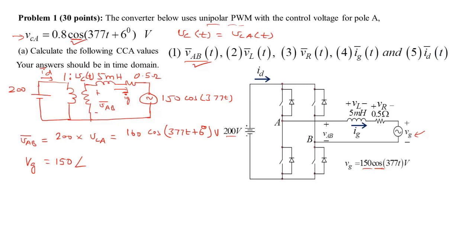Vg is defined as 150∠0°. If both were given as sine, we would use sine as the reference instead; the key is to choose one and stick with it throughout the problem. The grid current Ig as a phasor can be calculated by applying KVL around the loop — that is, Ig equals (Vab - Vg) divided by the impedance (R + jωL).